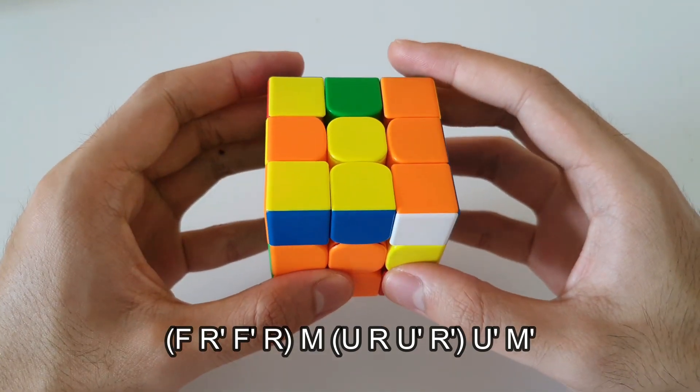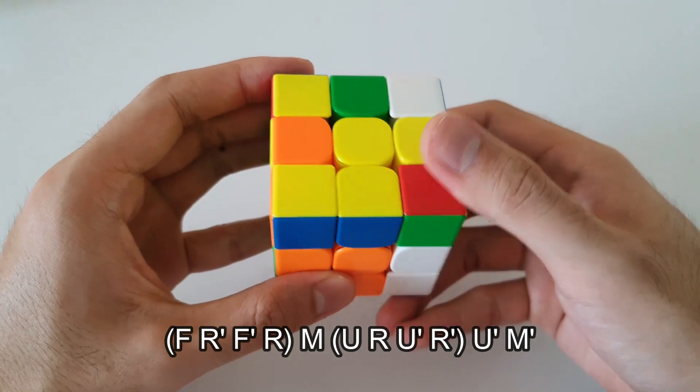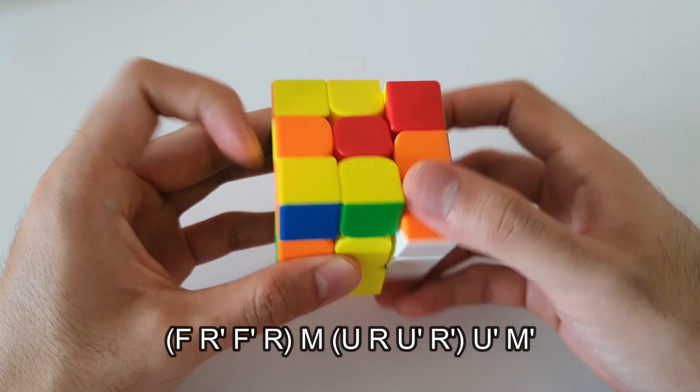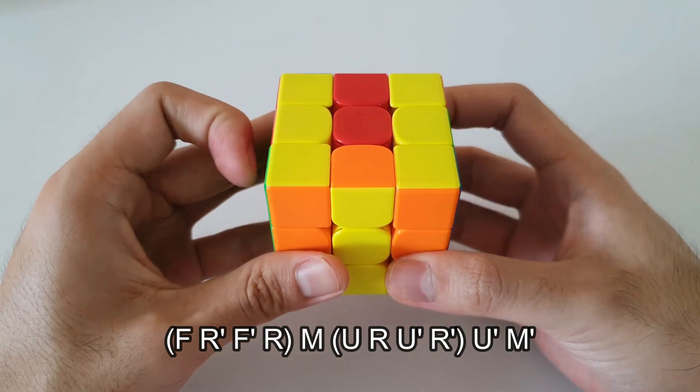Following that, we got an M move, which is middle layer down, which we can do like this. Following that, inverse sexy. Finally, U' M'.